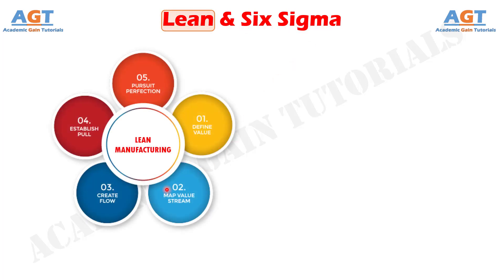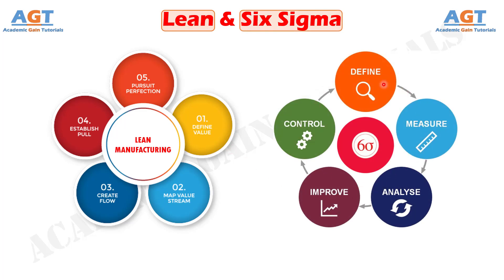Lean Management aimed at reducing process waste and increasing the worth of a firm's product or service to the customer. Conversely, Six Sigma is a quality measurement that seeks near perfection in products or services. The concept of Lean Management was first suggested by the Toyota Production System, where removal of waste is given more weight. On the other hand, Motorola primarily headed the process of Six Sigma in the year 1986, which ensures that 99.996% of the company's manufactured products are free from any defects.